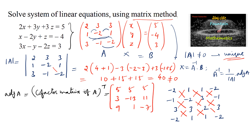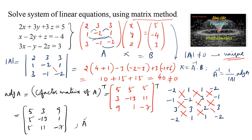Taking the transpose of the cofactor matrix gives the adjoint matrix: [5, 3, 9; 5, -13, 1; 5, 11, -7]. Therefore, A⁻¹ = (1/40) × [5, 3, 9; 5, -13, 1; 5, 11, -7].